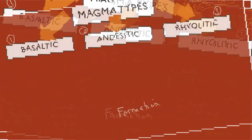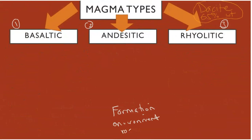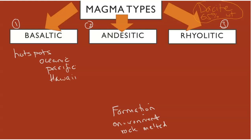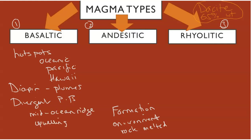In terms of formation, the environment in which rock melts to form magma dictates the type and characteristics. Basaltic magma is associated with hot spots around the world, mostly oceanic hot spots — the Pacific is a great example, with Hawaii as the classic case study. It also forms through mantle plumes, diapirs, and divergent plate boundaries such as the mid-ocean ridge, where magma upwells from the lower lithosphere or asthenosphere via convection currents. This is essentially a dry melting example.